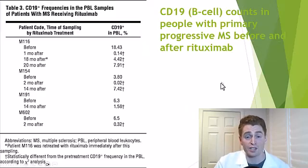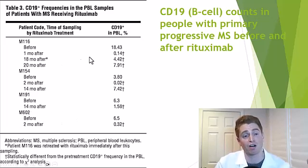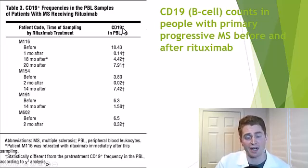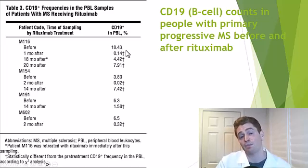Let's look at some longer term outcomes. This is primary progressive multiple sclerosis, people who received rituximab. These are different people in the study. They just used an arbitrary name. And you can see they looked at the percentage of CD19 positive cells. Let's look at M116. You can see before the drug, the level was 18.43%. One month afterwards, it was 0.14. And even 18 months afterwards, it was 4.42, much, much lower than baseline. And this can vary tremendously from person to person.